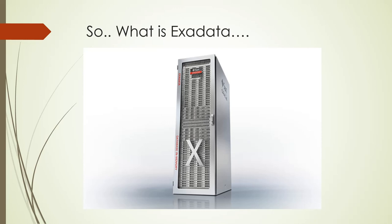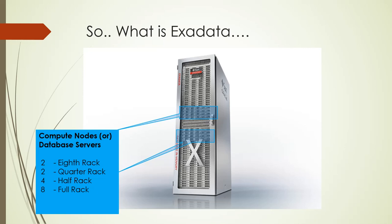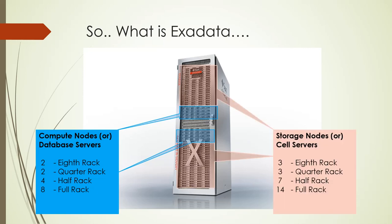There are three important components of Exadata, and the configuration of these components varies based on the rack setup. The first component is the compute node, also called the database server. All databases will be configured and running on these database servers. The second component is the storage node, also called the cell server. All database contents including data files, archive logs, etc. get stored in the storage servers through ASM. The storage servers are intelligent enough to understand database requests and offload database operations at the storage layer.